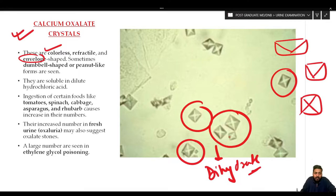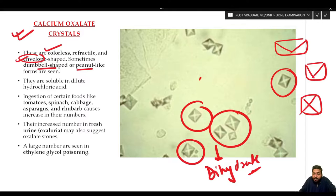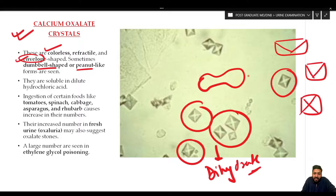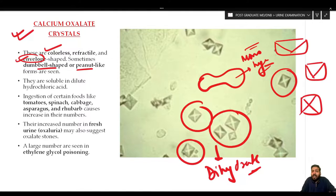Sometimes they are dumbbell-shaped or peanut-shaped — these are the monohydrate forms. I will show you with the help of a diagram. These crystals are very commonly encountered in normal urine.